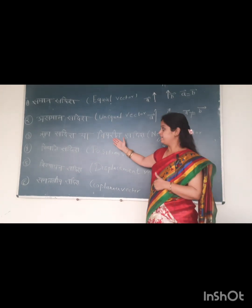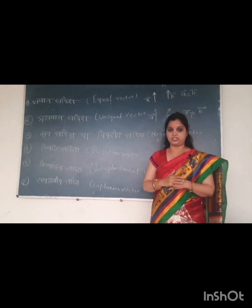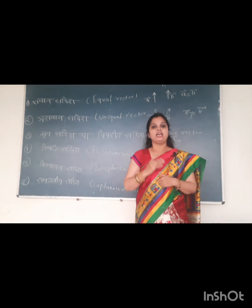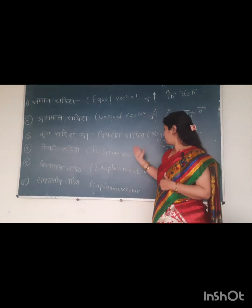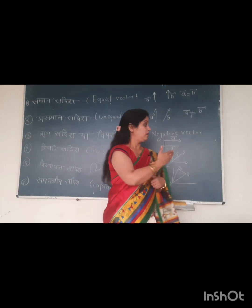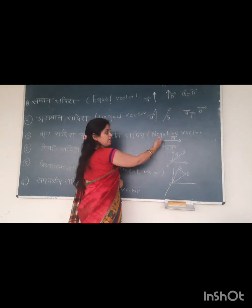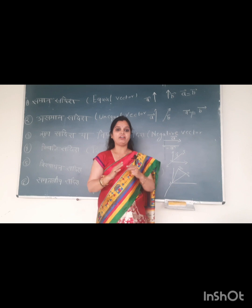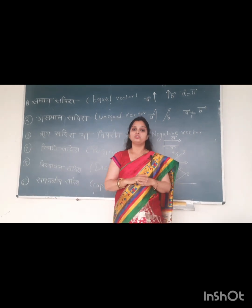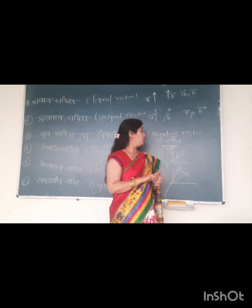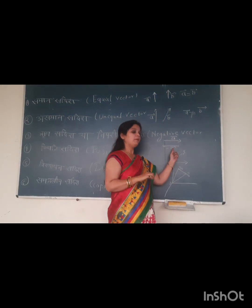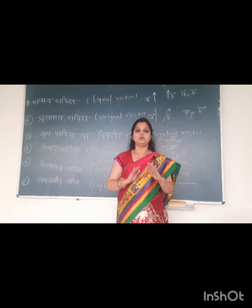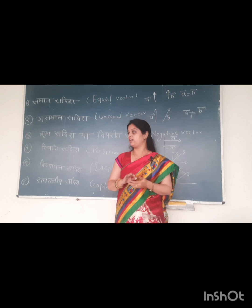The third type of vector is negative vectors (pratidish sadish). These are vectors whose directions are opposite. If one vector is pointing north, then the other vector points south. Their magnitudes are equal but their directions are opposite. These are called opposite vectors or negative vectors.